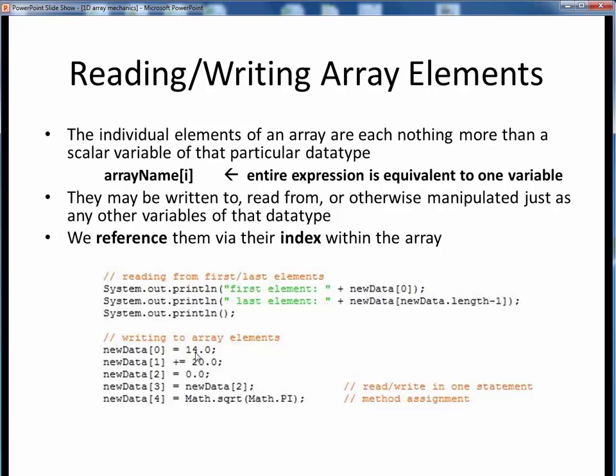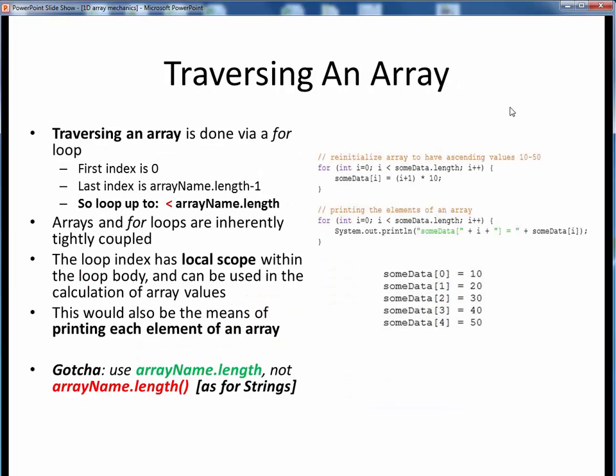So in this bottom example, new data is an array of doubles, which means that each left-hand side term is itself one double variable. And we can assign them values, increment a value by 20, assign to it some other array elements, or assign to it the resultant value of some right-hand side calculation, as we see in this last line. Finally, we said earlier that arrays and for loops are tightly coupled.